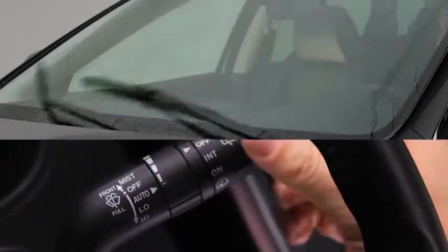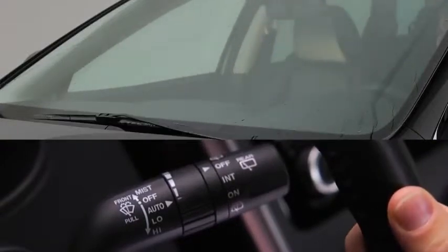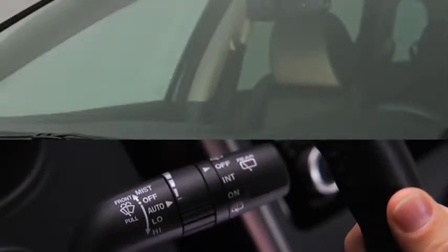For automatic wiping, pull the lever down to auto. When the wiper lever is in the auto position, the rain sensor detects the amount of rainfall on the windshield and turns the wipers on or off automatically.